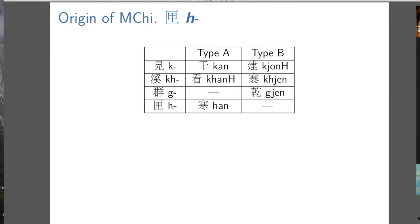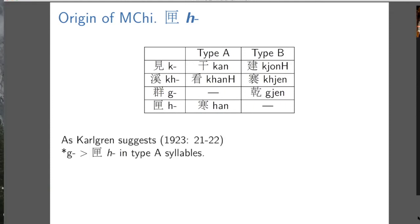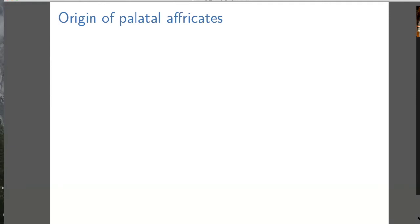The H, which is probably a gamma — this is one of the confusing things about Baxter's transcription — means something like a voiced velar fricative that occurs only in type A syllables. So we see a complementary distribution. We can do internal reconstruction and propose that G changes to gamma in type A syllables. So now we've gotten rid of gamma for Old Chinese.